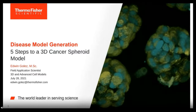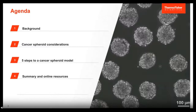Hello, everyone. My name is Edwin Goles, and I'm the Field Application Scientist for 3D and Advanced Cell Models here at Thermo Fisher. Thank you for taking the time to listen to today's webinar, which will highlight the five steps to generating cancer spheroid models. Here's an agenda: we'll start with background on what 3D cell models are, review considerations when developing cancer spheroid models, examine the five steps required to generate cancer spheroids, and end with a summary and available online resources. I want to acknowledge our global R&D teams who put in extensive effort to provide the material for this webinar.